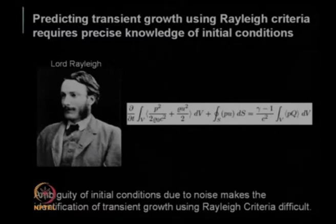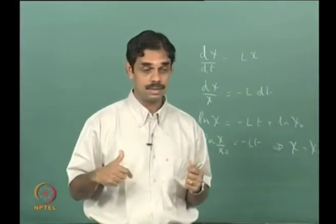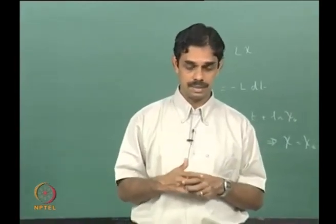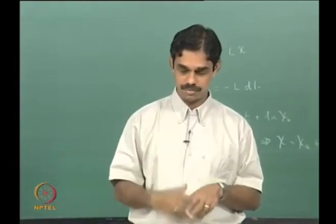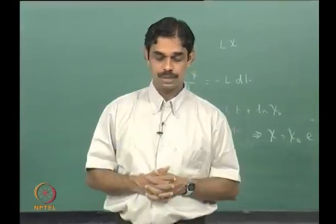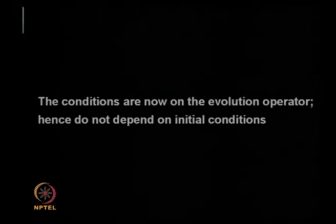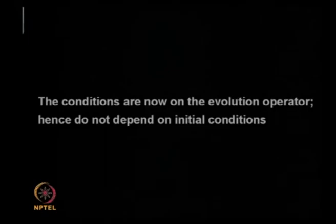So we cannot really use this to study transient growth. But you can look at the operator — everything we did: the G-max, the pseudo-spectral abscissa, and the condition that the pseudo-spectra should protrude to the right side — they just depend on the evolution operator and are giving the maximum possible growth. We are not able to pinpoint this for a specific initial condition, but G-max is like an upper bound — the maximum transient growth for any initial condition.